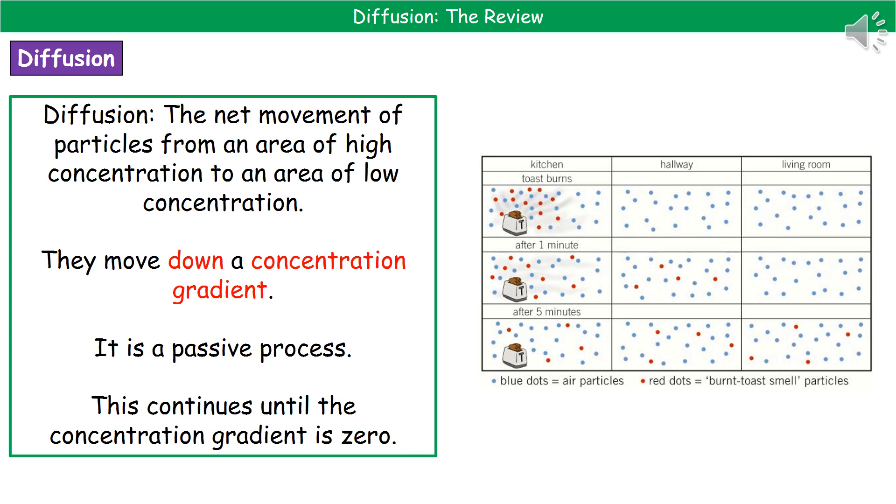Now, one of the key things about diffusion is that it's what's known as a passive process. Any passive process is one that doesn't require energy. So there's no ATP needed for diffusion. It just happens without any energy being put into it.